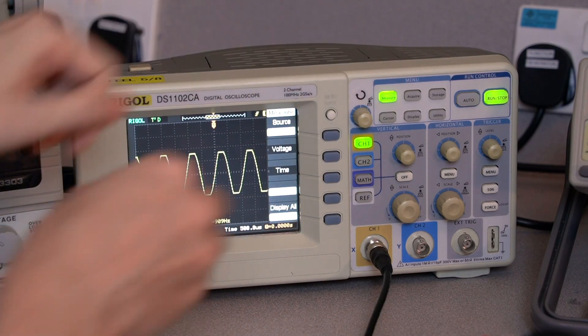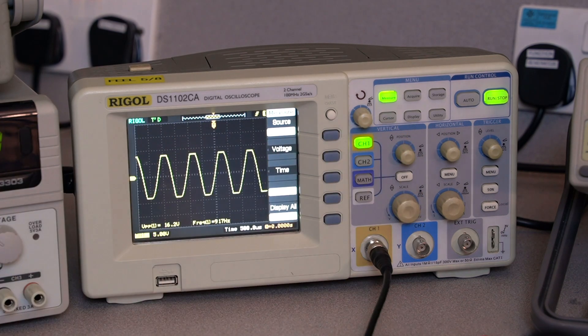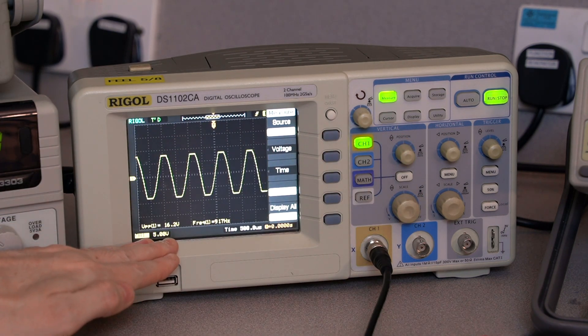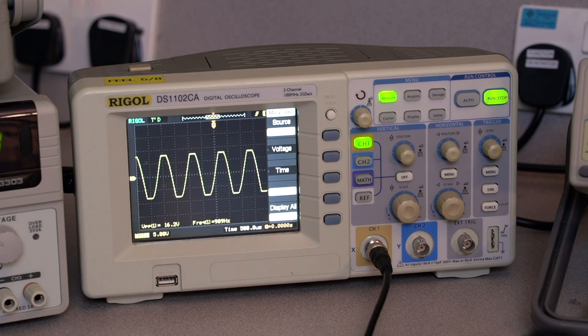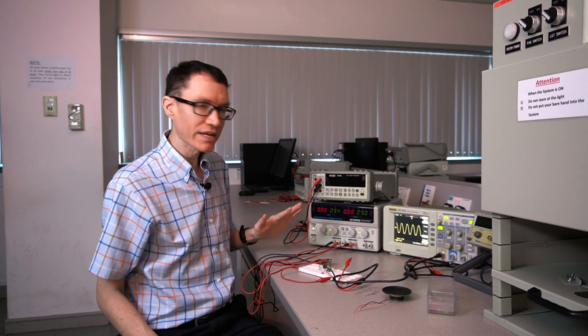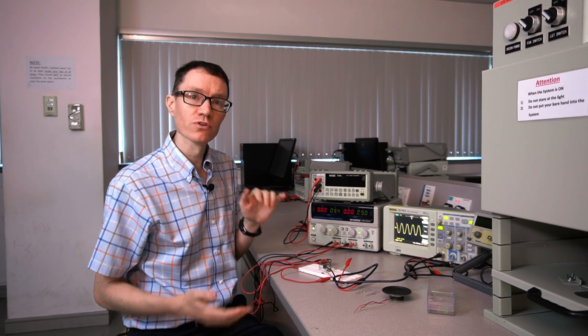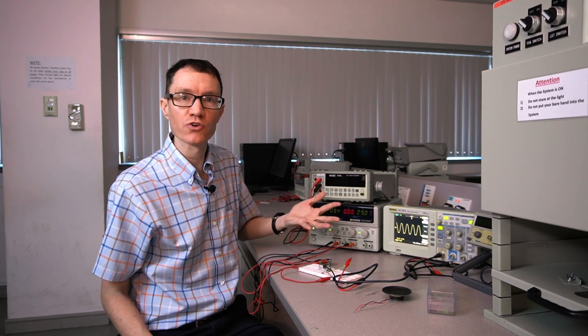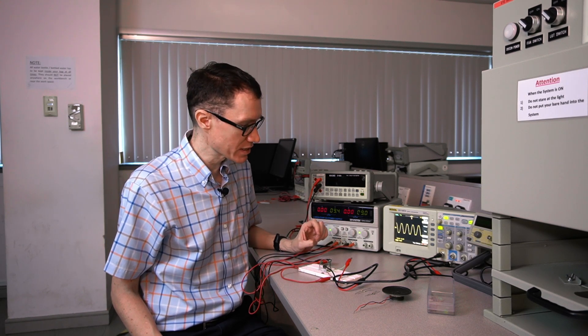It looks like the peak-to-peak voltage is about 16.2, 16.4 volts. That's roughly what we expect for a saturated amplifier. The most we could ever expect from the op-amp here is plus or minus 9 volts or 18 volts peak-to-peak. And obviously there's internal biasing in the op-amp, so we're never going to get that.